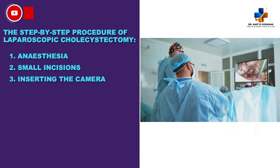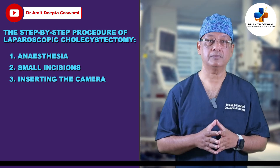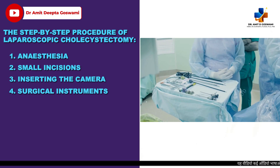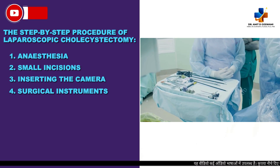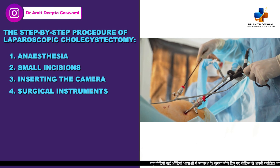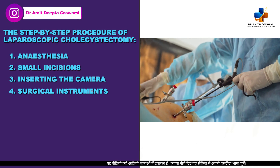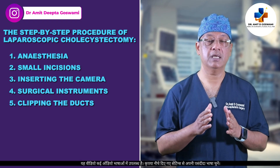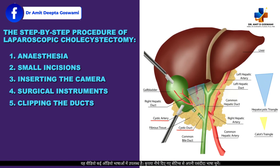Specialized tools are inserted through the other ports to carefully separate the gallbladder from the liver and surrounding structures. The cystic duct and cystic artery are clipped and cut safely.